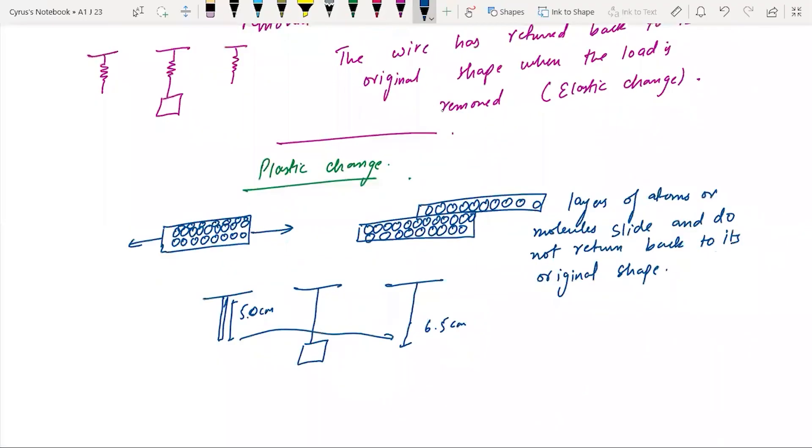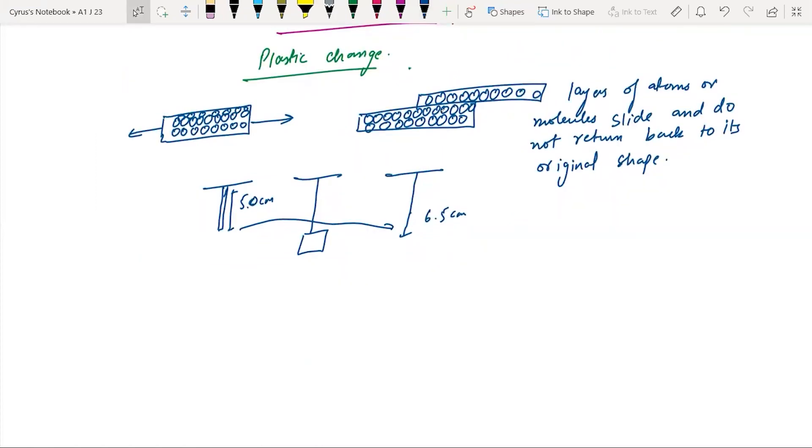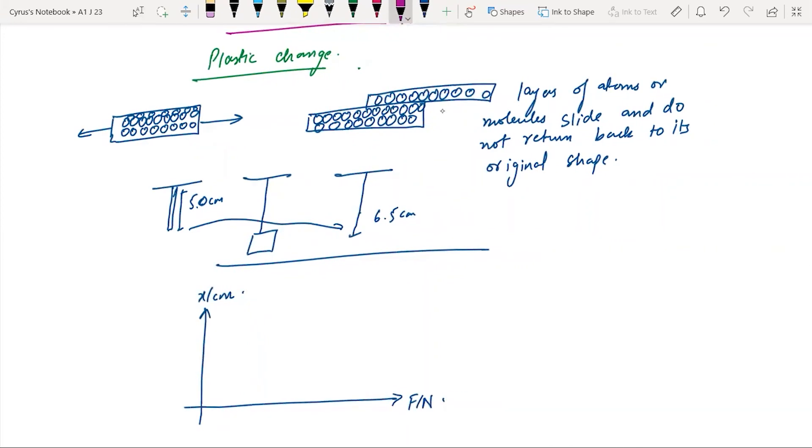I am going to talk about the graph that we can have in such conditions. Here I have extension x in cm and the force in Newtons. If I am going to load here it will bend like this. This point here where we get a straight line, this point P is known as the limit of proportionality.